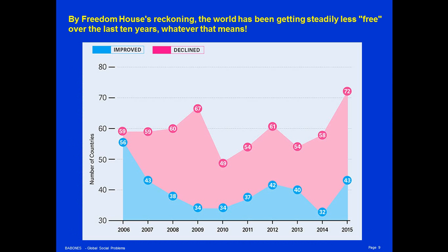By Freedom House's reckoning, the world has been getting steadily less free over the last 10 years. We might question exactly what that means and the robustness of Freedom House's ratings, but whatever they're measuring, it is becoming less good over time. This chart from Freedom House's 2016 report shows the number of countries with improving freedom scores versus the number with declining freedom scores in each year. Since 2006, in every single year, there have been more countries that went down on the Freedom Index than went up.